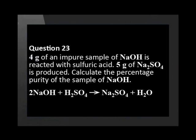4 grams of an impure sample of sodium hydroxide is reacted with sulfuric acid. 5 grams of sodium sulfate is produced. Calculate the percentage purity of the sample of sodium hydroxide.